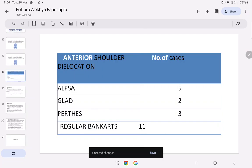ALPSA is seen in 5 cases, GLAD in 2, Perthes in 3, regular Bankart in 11.